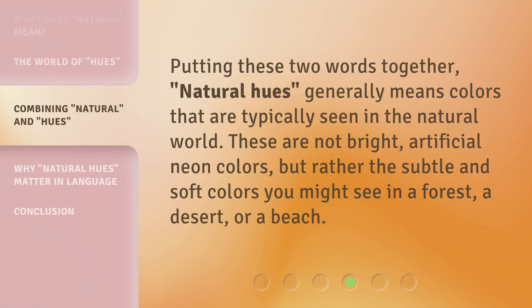Putting these two words together, 'natural hues' generally means colors that are typically seen in the natural world. These are not bright, artificial neon colors, but rather the subtle and soft colors you might see in a forest, a desert, or a beach.